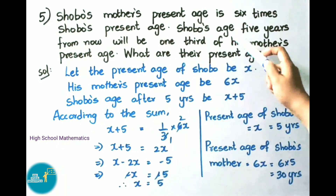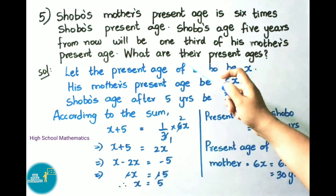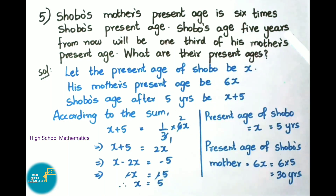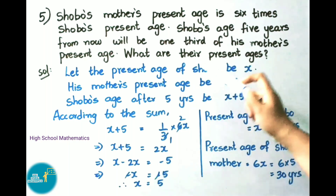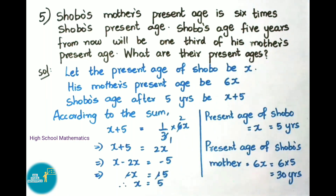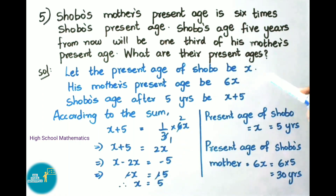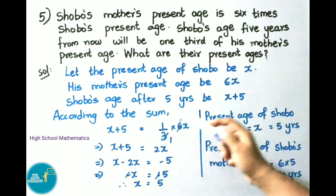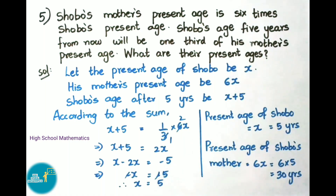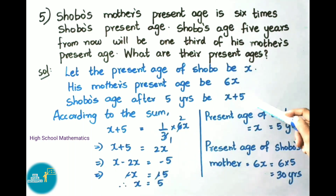Question number 5: Shobo's mother's present age is 6 times Shobo's present age. Shobo's age 5 years from now will be one third of his mother's present age. What are their present ages? Let the present age of Shobo be x. His mother's present age will be 6x. Shobo's age after 5 years will be x + 5.